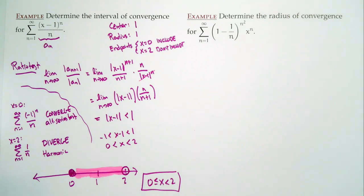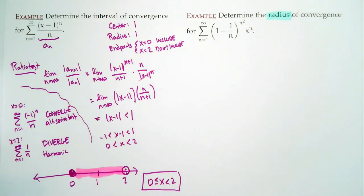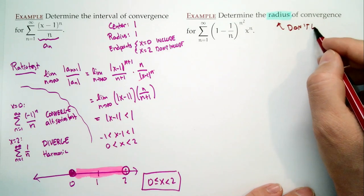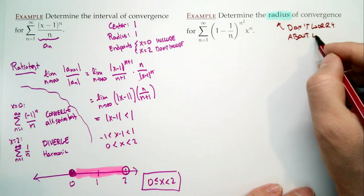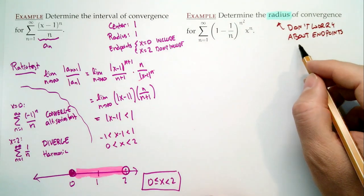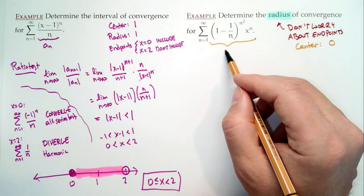For the next one: determine the radius of convergence. Notice there's a key difference — it specifies the radius and not the interval. That tells us: don't worry about the endpoints. When you're after the radius, we don't really care whether the endpoints converge or diverge. There are some sums where it's hard to figure out convergence even with everything we've learned. Our center is easy to spot: it's zero.